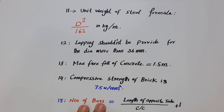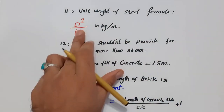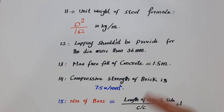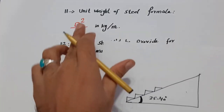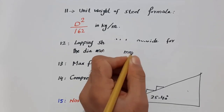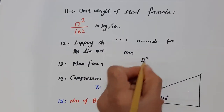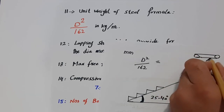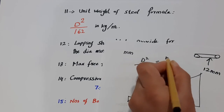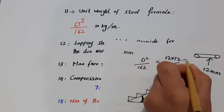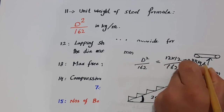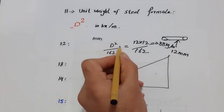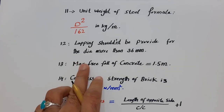The eleventh one is the unit weight of steel. The formula is: weight = D² / 162 kg per meter, where D is the diameter in millimeters. For example, for a 12 mm diameter steel rod: 12 × 12 / 162 = 0.88 kg per meter. You can then multiply by the running length to get total weight.